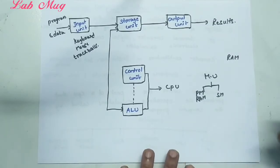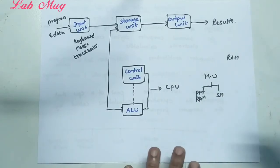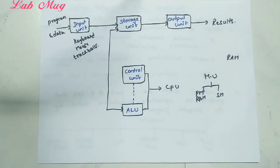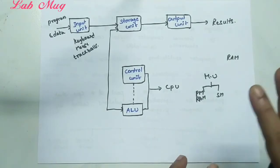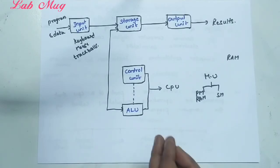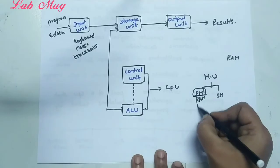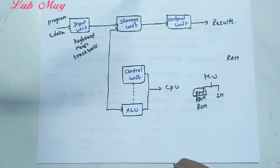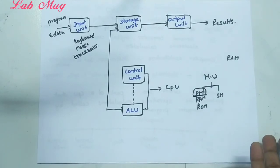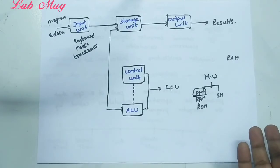Next, cache memory. Cache memory is another part of the memory unit. Sometimes CDs and secondary storage devices are also used.